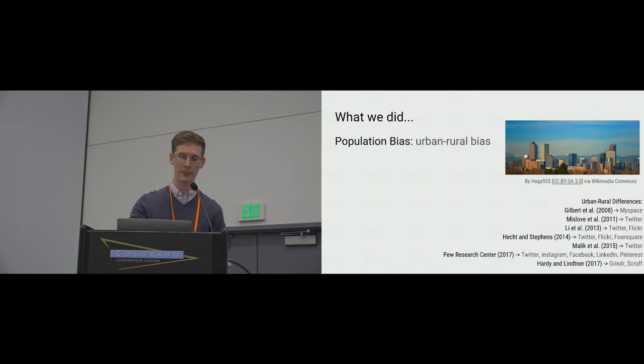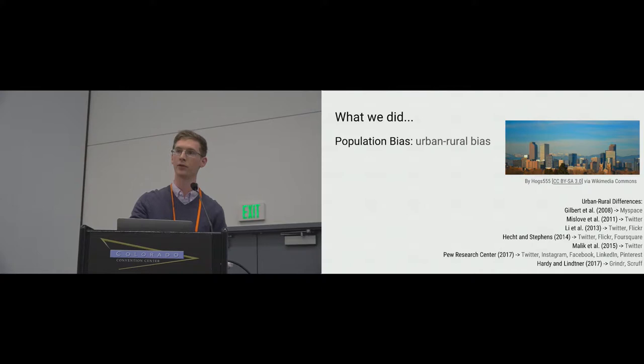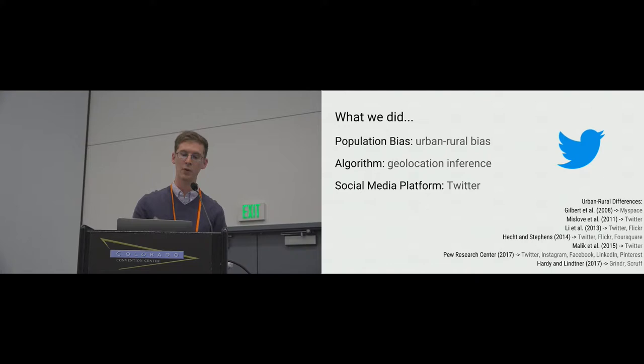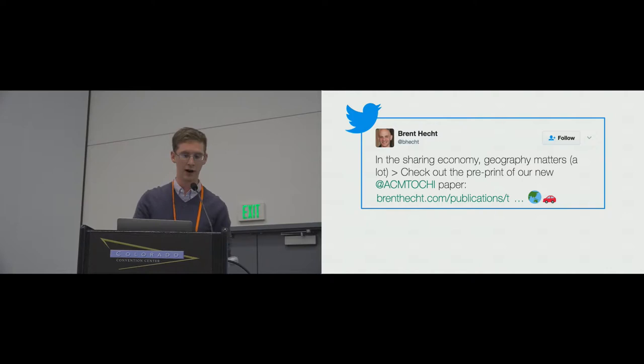To address these questions, we looked at a specific use case of population bias in social media based algorithms. We focused on one particularly prevalent type of population bias: urban-rural bias. On almost any social media platform, people from urban areas are overrepresented in number and generally more active as well. We studied how urban-rural bias affects geolocation inference algorithms, and we did so on Twitter, as the predominant platform for which these algorithms are built.